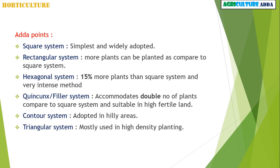Some important points about planting systems: The square planting system is the simplest and most widely adopted. The rectangular system accommodates more plants compared to the square system. The hexagonal system has 15% more plants than the square system. The Quincunx or filler system accommodates double the number of plants compared to the square system. The contour system is adopted in hilly areas, and the triangular system is mostly used in high-density planting.